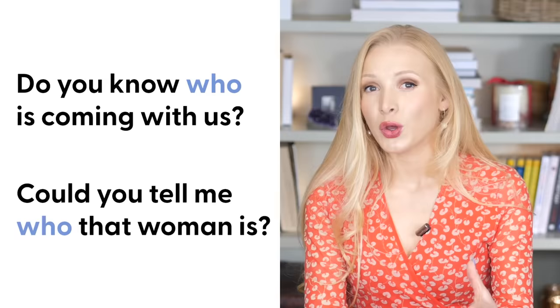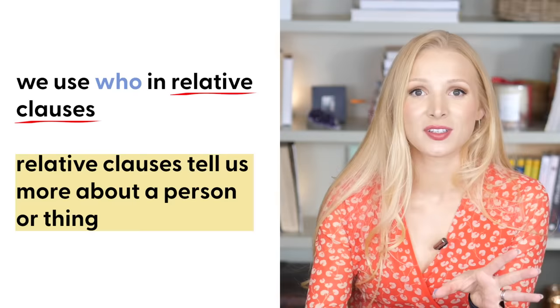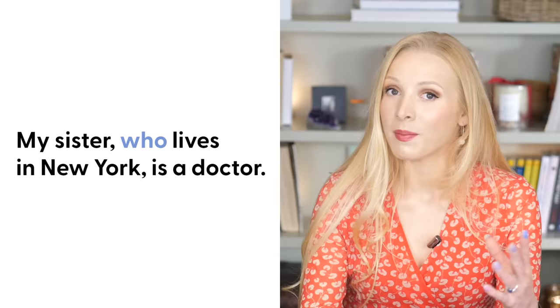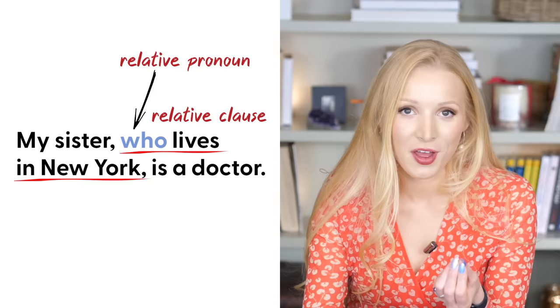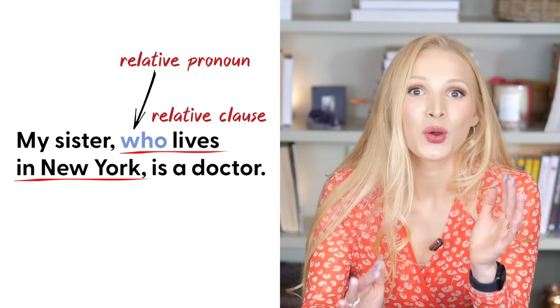We also use who in indirect questions, along with direct questions. For example: Do you know who is coming with us? Could you tell me who that woman is? And we use who in relative clauses — these are clauses that tell us more about a person or thing. For example: My sister, who lives in New York, is a doctor. In relative clauses, who is the relative pronoun we use to refer to the subject of the clause.